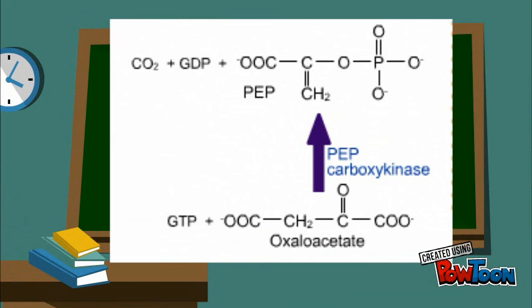The second unique enzyme of gluconeogenesis, phosphoenolpyruvate carboxykinase, catalyzes the conversion of oxaloacetate to phosphoenolpyruvate. Note that this is another energy-requiring step.